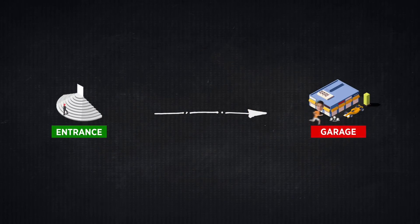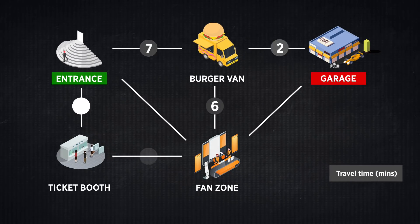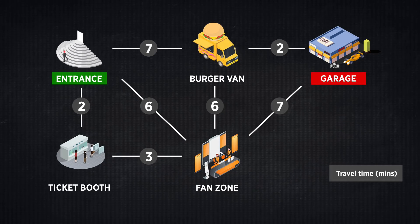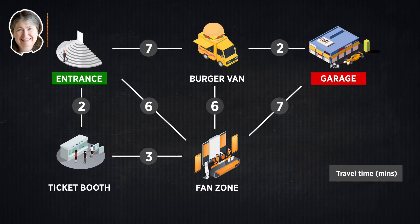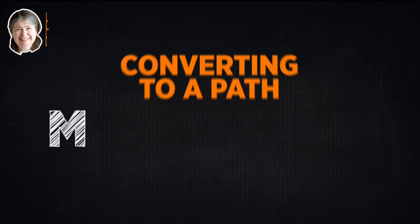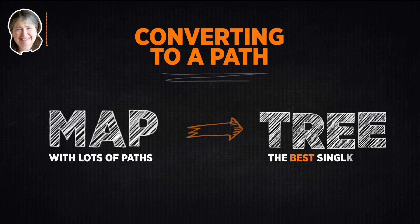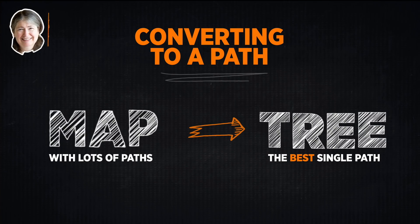Suppose Lando is in a hurry and needs to find the fastest way to walk from the entrance of the racetrack to the McLaren garage. This diagram shows a map of the venue with numbers showing how many minutes it takes to walk between each place, including time to chat with fans in the fan zone or stop for a burger at the burger van. The algorithm will compute the best path from the entrance to each venue location, converting a map with lots of paths into a tree — a map where there is only one, best way to go.